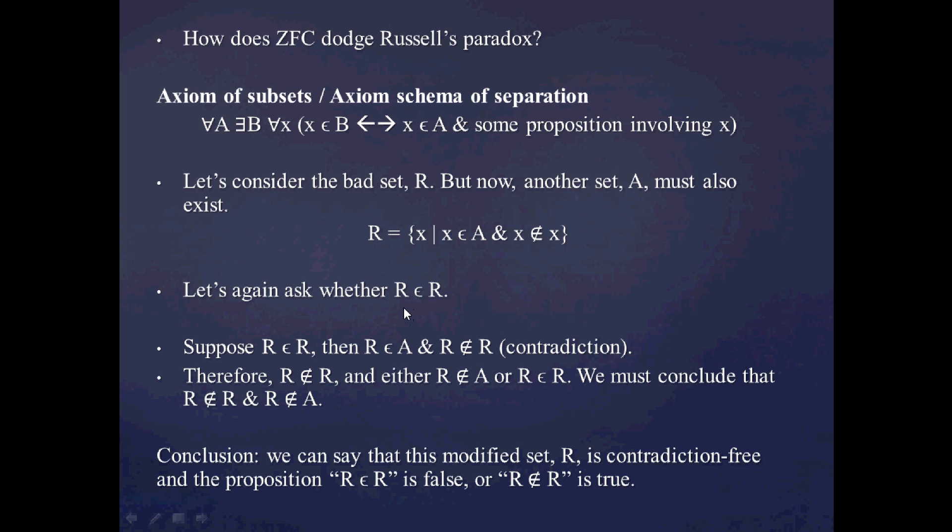And notice that we can say it's false. We're not forced to say it's both true and false, or it's neither true nor false. We can say that this proposition here, R being an R is false. Or another way of saying that is that R is not an R. It's a true proposition. So notice that this modification of the subset axiom allows us to essentially dodge the Russell paradox.